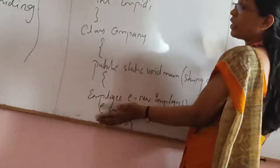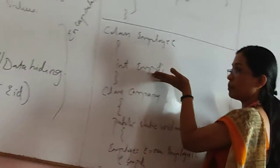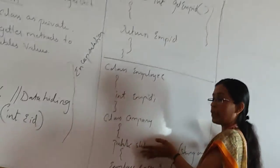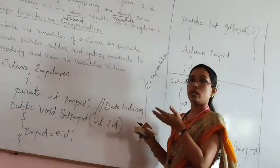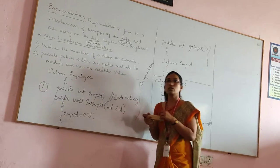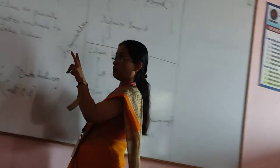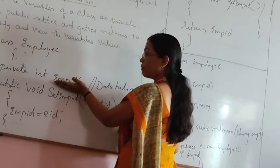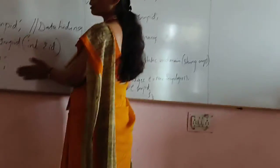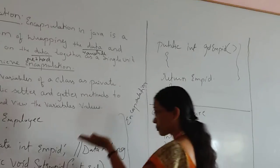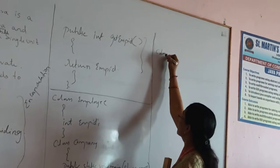If we are not declaring this as private, this data variable can be accessible to any other classes without any restrictions. Therefore, using encapsulation we can provide security for the data present in the class, and direct accessing is not possible. If they want to access, they definitely have to use public setter and getter methods. Those are the two steps to achieve encapsulation.